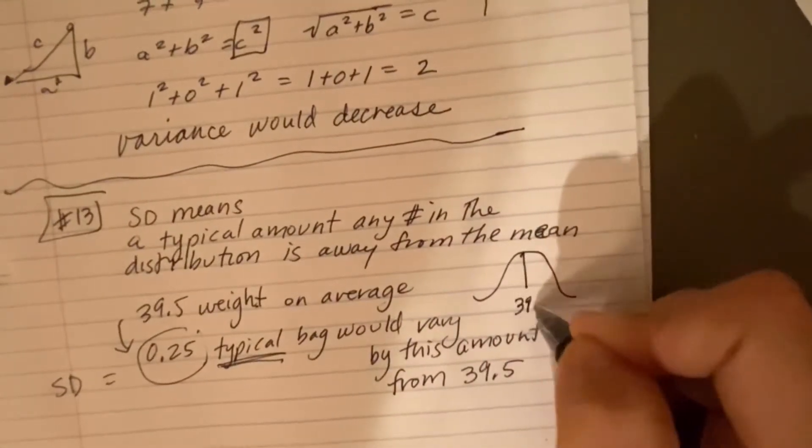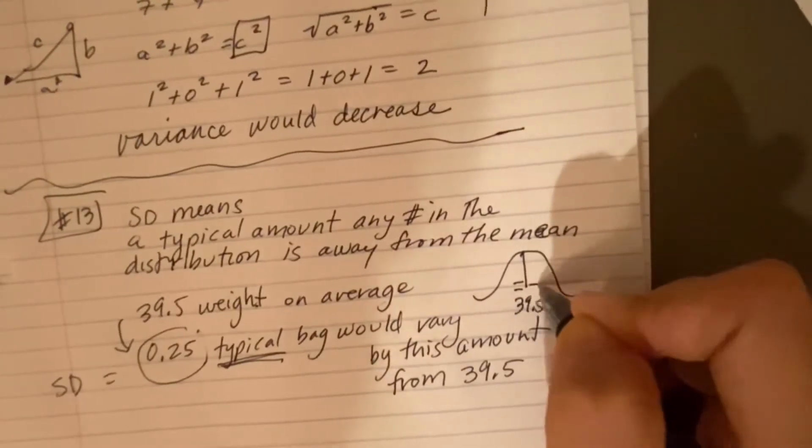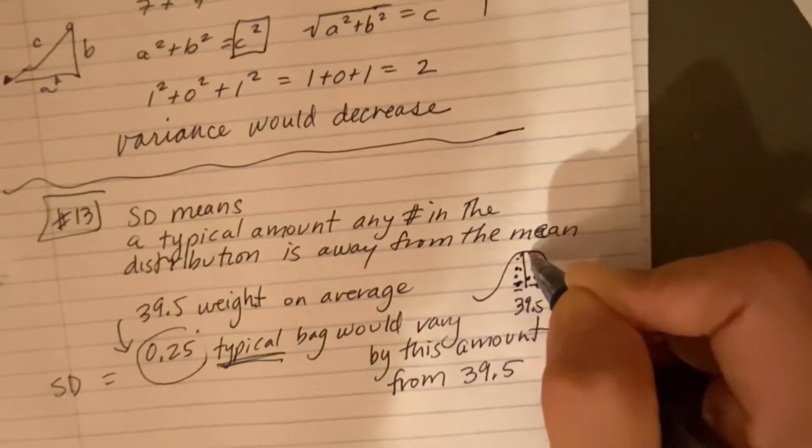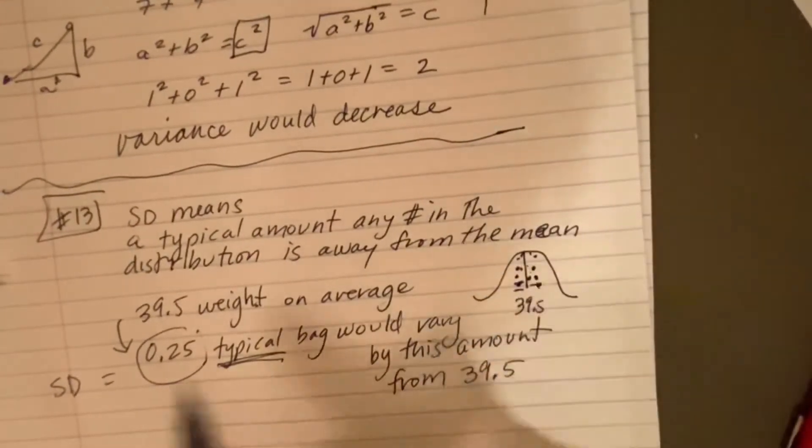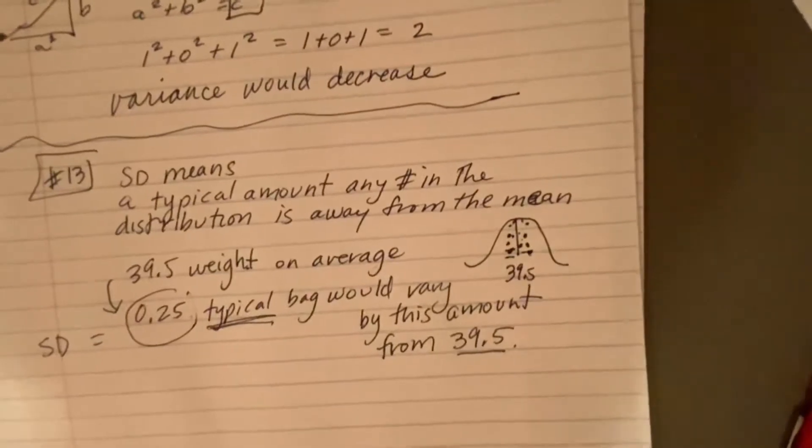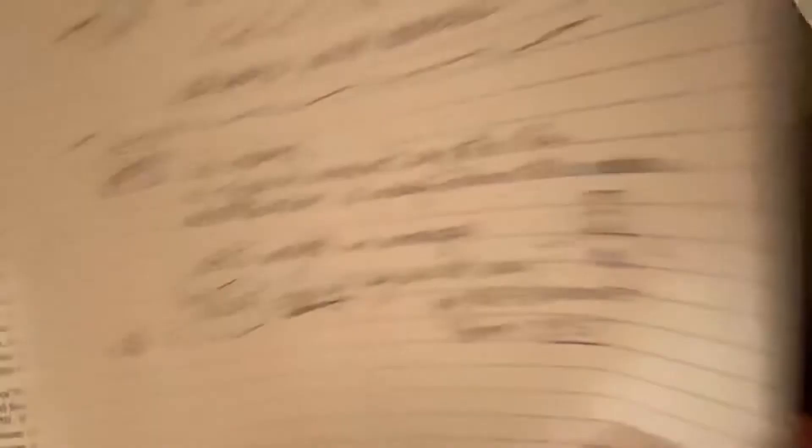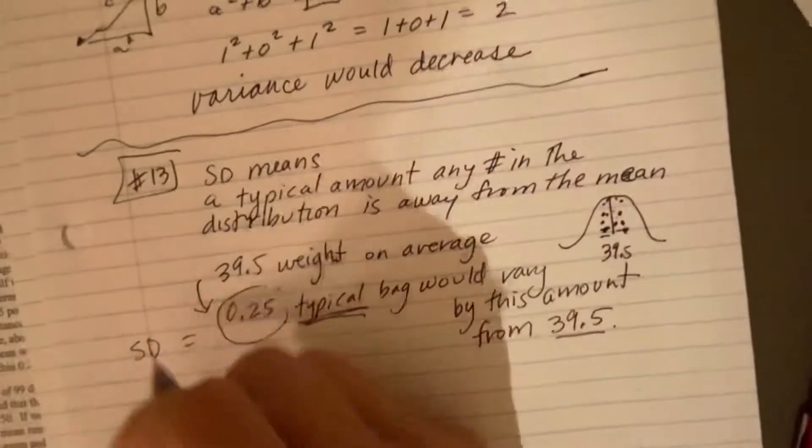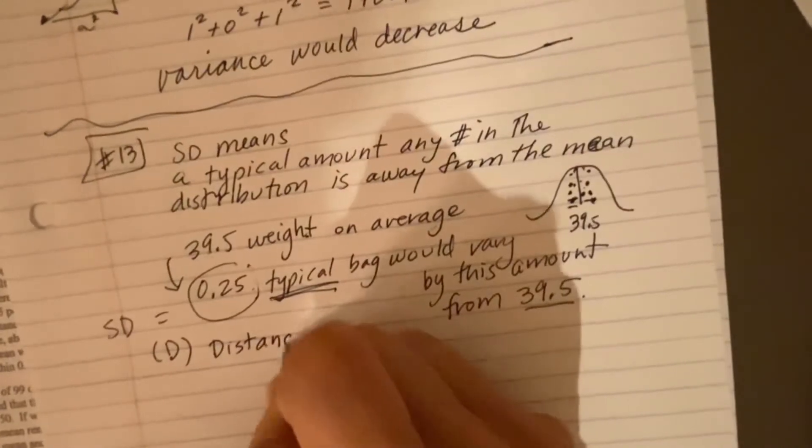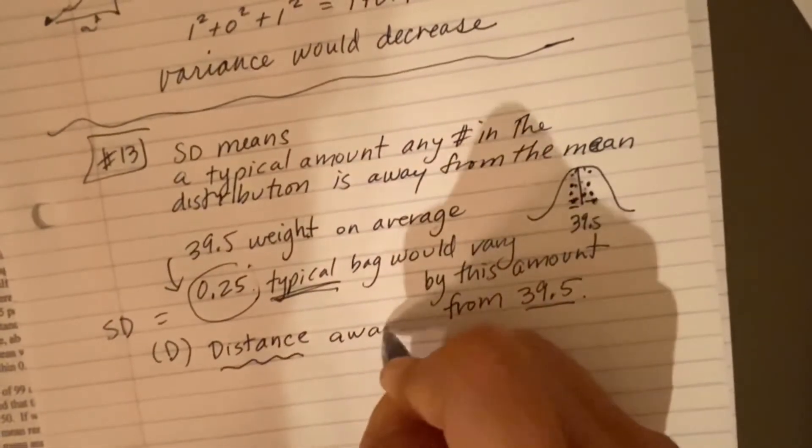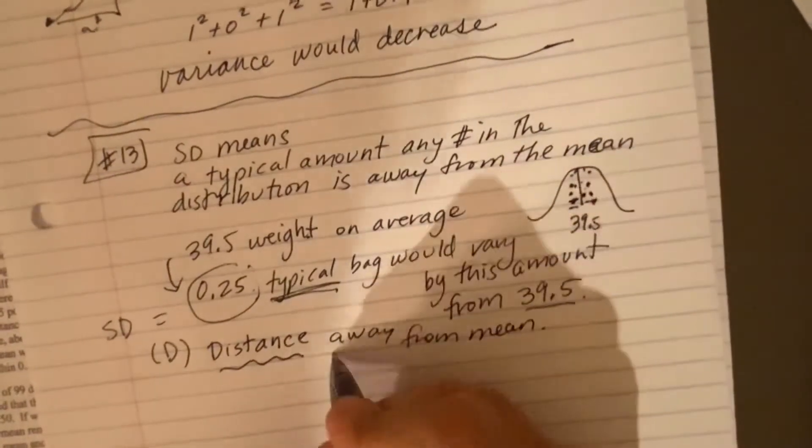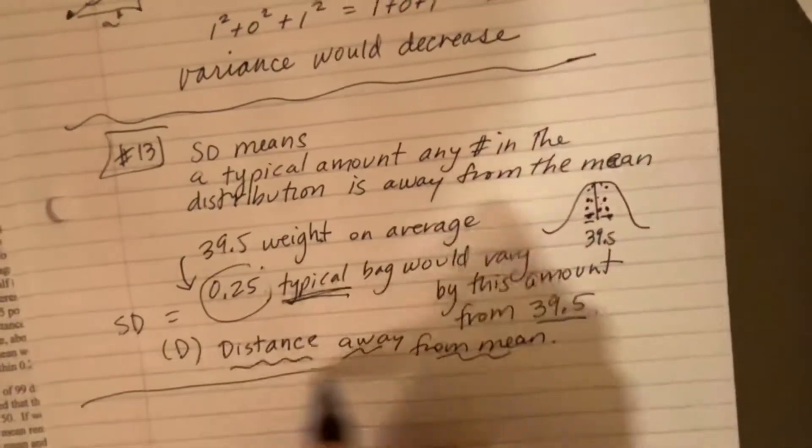So that's kind of like what we said last time, the distance away. So if this is 39 and a half, the distance away from any other number in the distribution, this is where all the typical values are, and it's the distance away from that mean, a typical distance, which is the definition of standard deviation. So if you want to put D, you also want to just jot down the words distance away from mean. All right, nice shot. Let's look at number 14.